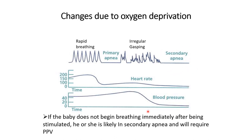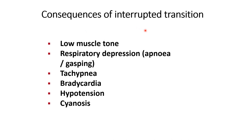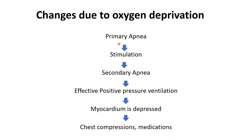Whenever a baby is not breathing immediately after birth, after the initial steps, you should consider that the baby is in secondary apnea and urgent positive pressure ventilation should be started. The consequences of interrupted transition include low muscle tone, respiratory depression, apnea and gasping, tachypnea initially, then bradycardia, hypotension, and central cyanosis. After stimulation, if respiration does not start, consider secondary apnea and give effective positive pressure ventilation. If the myocardium is depressed, bradycardia is present, and heart rate is less than 60, give chest compression. If there is no improvement after chest compression, adrenaline medication will be required.